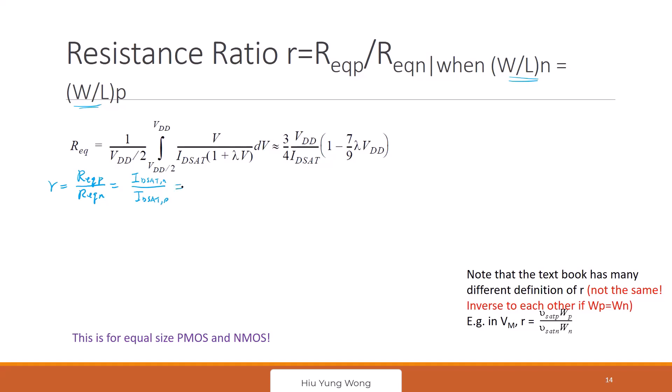Now, then what do we need to do? Just write the equation. IDSAT N is just μN COX, and then W on LN. Let's just repeat all the exercise we did before: VGS minus VTN, VDSAT N minus VDSAT N squared divided by two. This is the current.